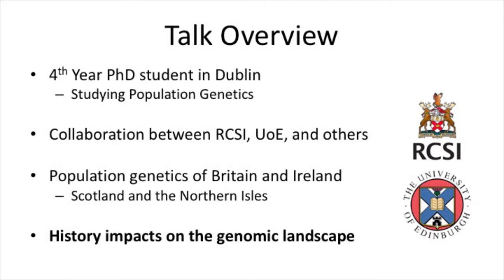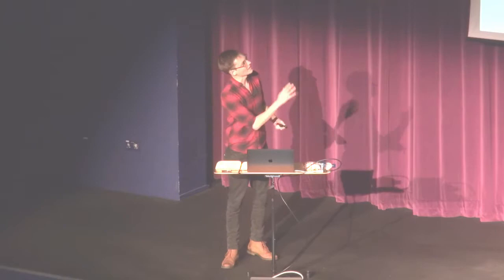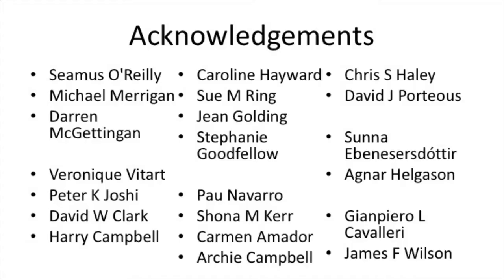My name is Ed Gilbert and I am a fourth-year PhD student studying population genetics — the genetic differences between groups of individuals because they're populations. The work I'm going to be presenting tonight is a result of collaboration between us in RCSI in Dublin and the University of Edinburgh, who have given us a load of samples to analyse, along with many others. This gives us a full genetic map of Britain and Ireland. What I hope to convince you is that history really does impact the genomic landscape — you can see all kinds of stories within people's genomes.